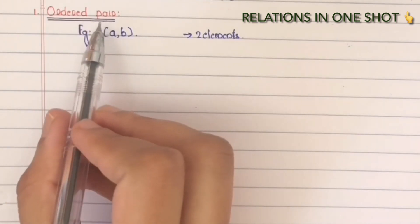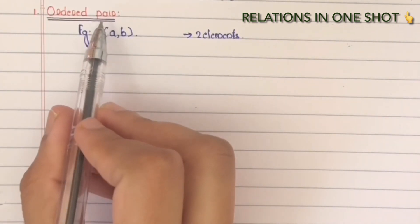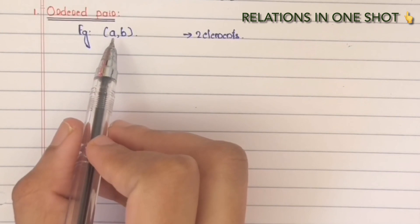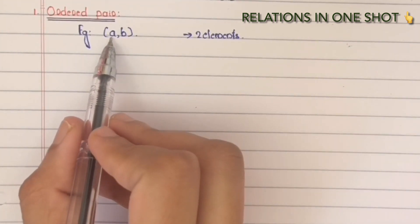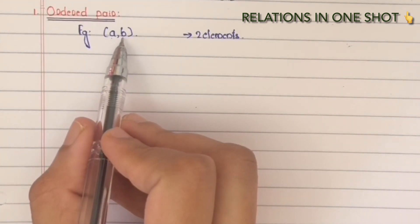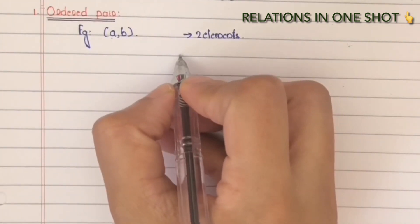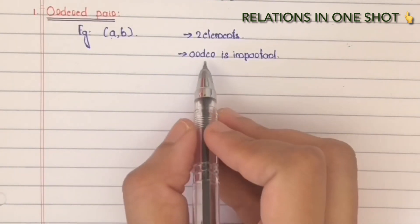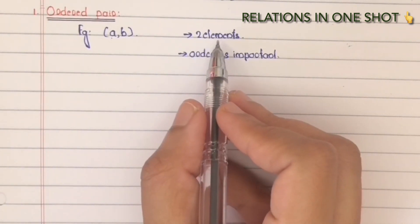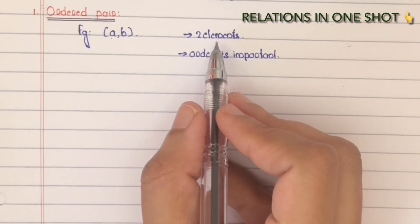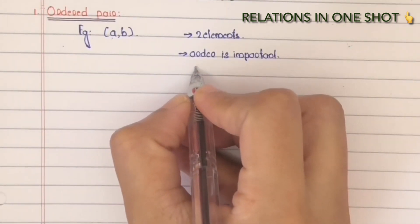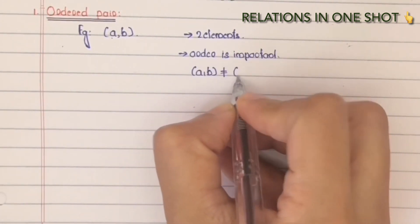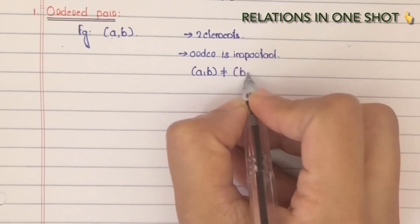Ordered pair — that is, the arrangement of the elements, order is important. This is the first element A and the second element B. So second point: order is important. That is, the order in which these two elements are arranged is important. That means AB is not equal to BA.